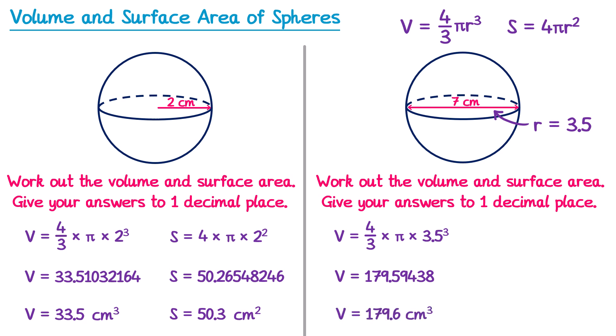For the surface area, we do surface area equals 4 multiplied by π, multiplied by r squared, remembering that r is 3.5, so multiplied by 3.5 squared. Typing this into the calculator, rounded to one decimal place, gives 153.9 centimeters squared.